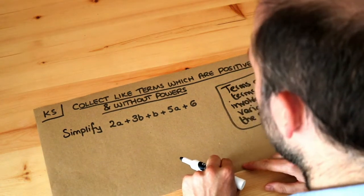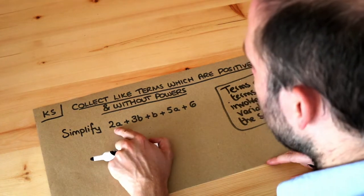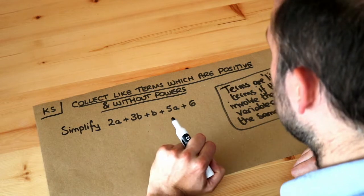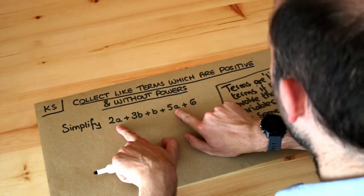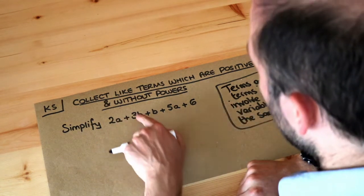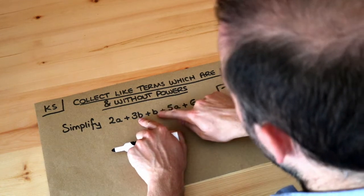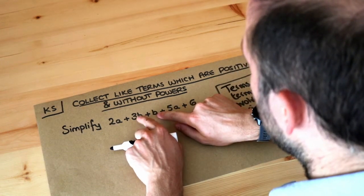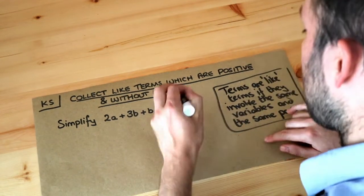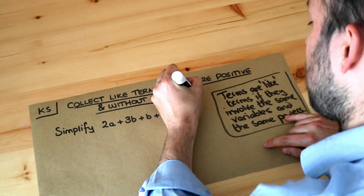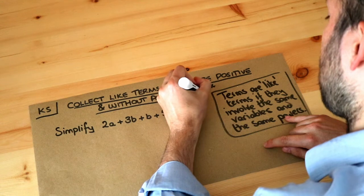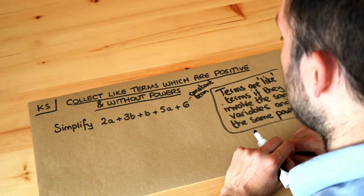Let's look at what are like terms here. This is 2a, which means two lots of a. Is there another term which involves just a? Yes there is — the 2a and the 5a are like terms. We've got 3b and another b; they're like terms because they both involve just b. And this 6 is a constant term because it has no variables — it's just a number without any letters.